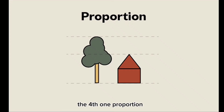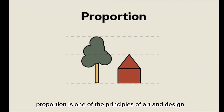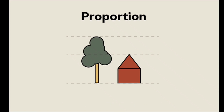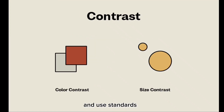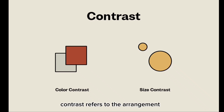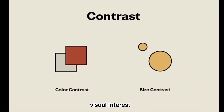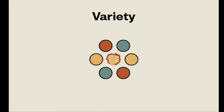The fourth principle is proportion, which refers to the relationship of size of objects in the body of work. Proportion is one of the principles of art and design that organizes structural elements, and the relation between parts — often discussed in terms of context and standards — is the main issue. The fifth principle is contrast, which refers to the arrangement of opposite elements and effects such as light and dark colors, smooth and rough textures, and large and small shapes. Contrast can be used to create variety, visual interest, and drama in an artwork.